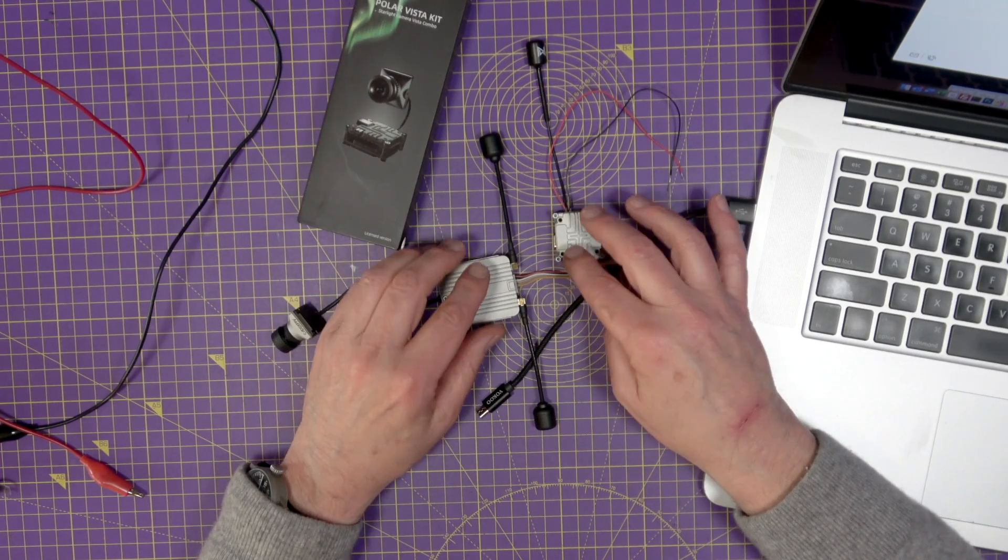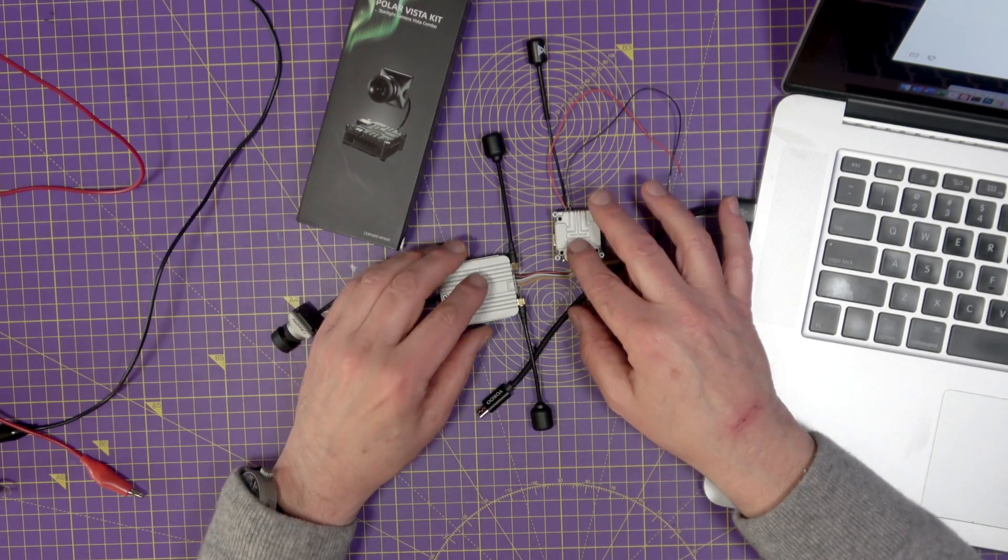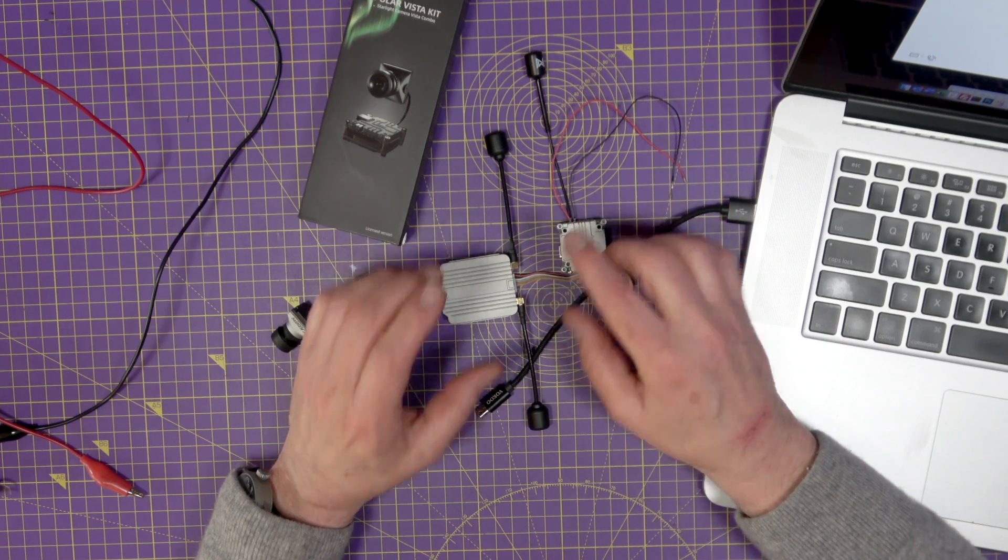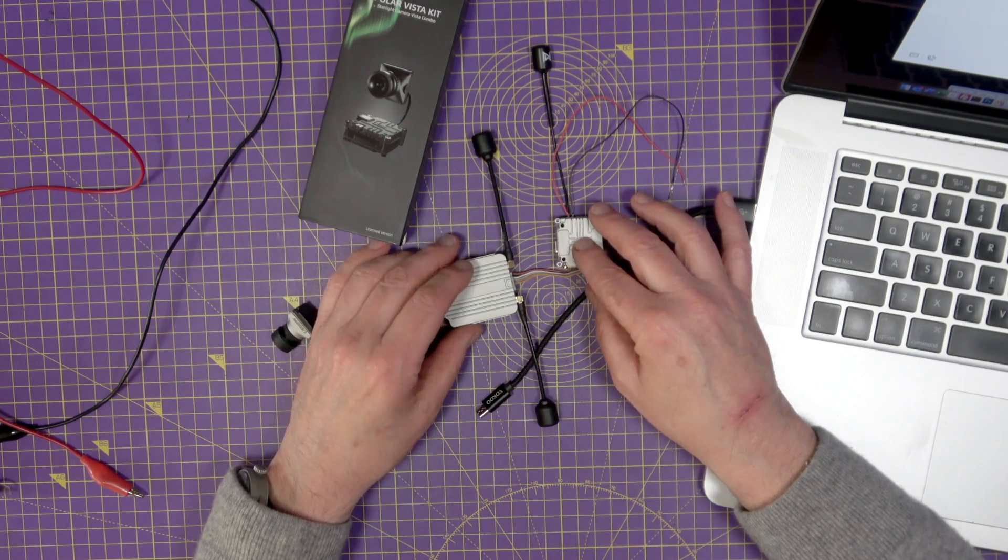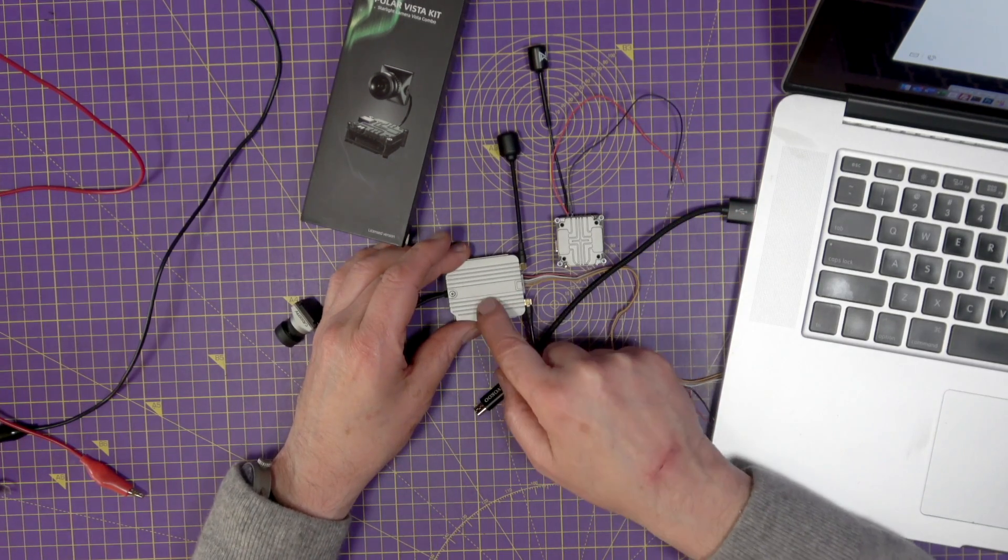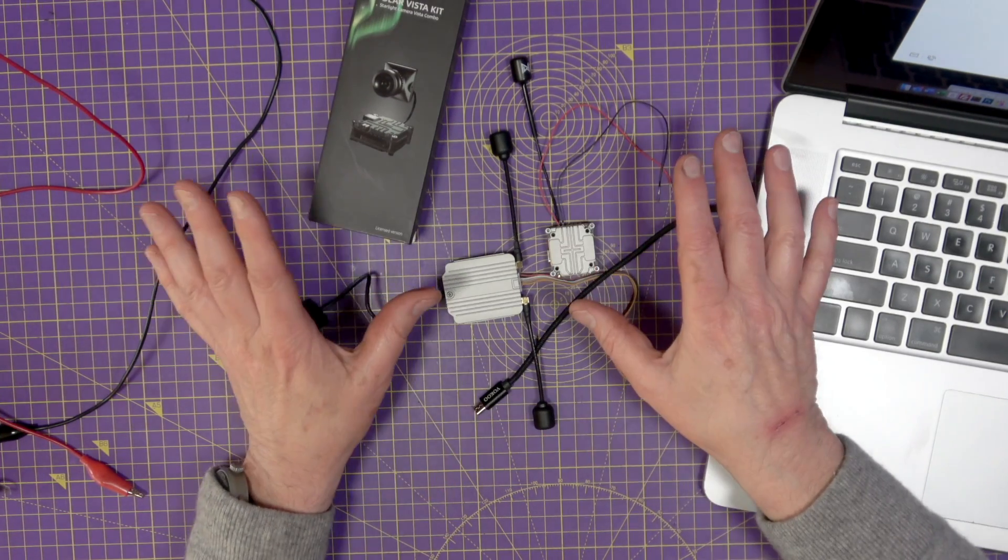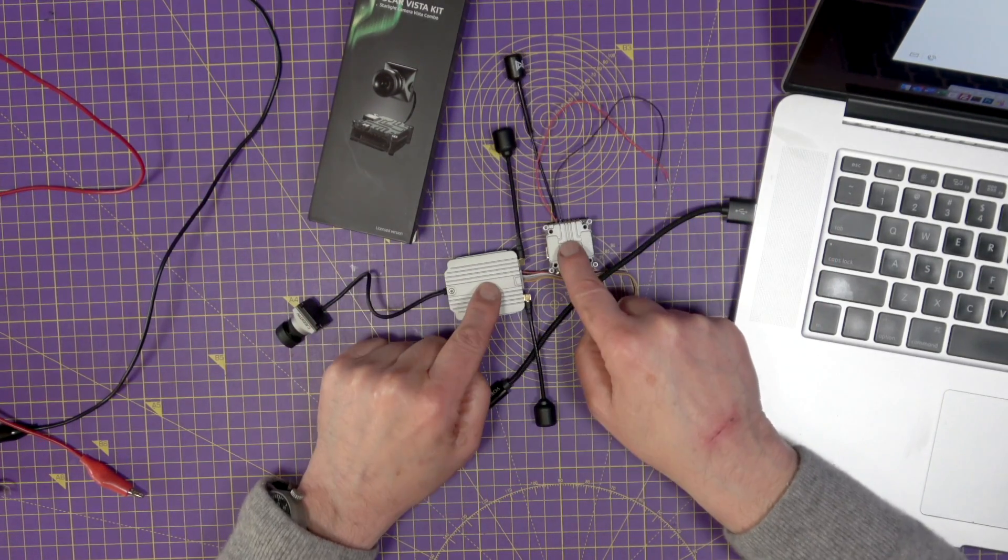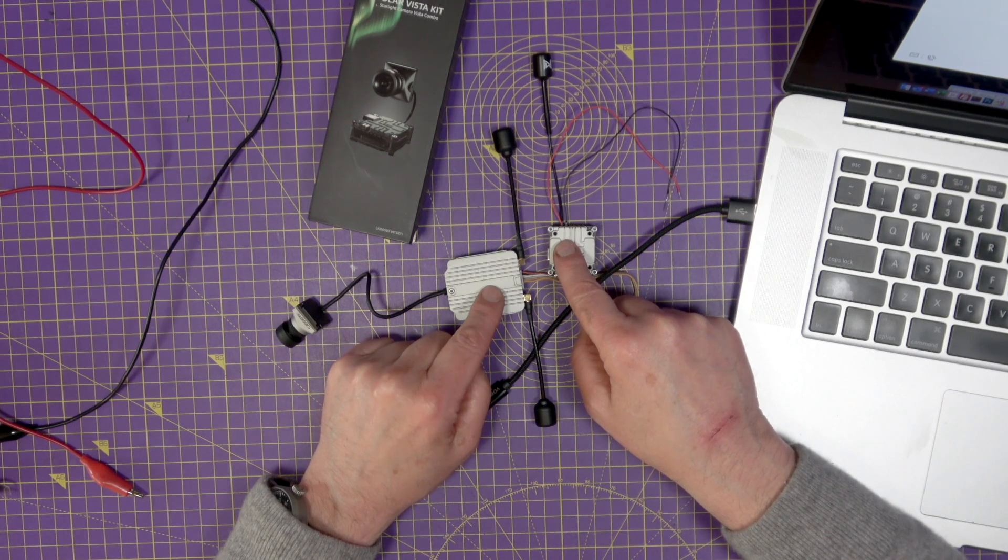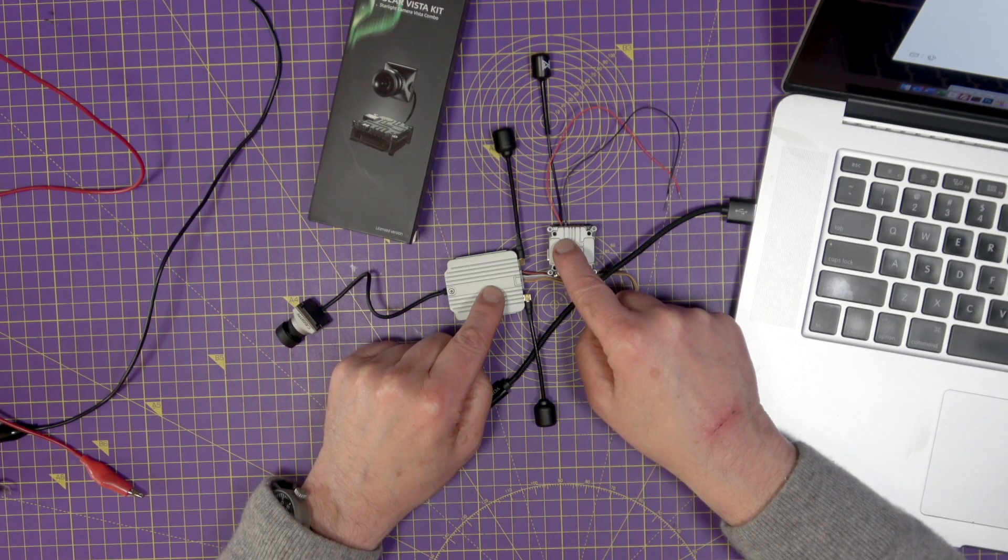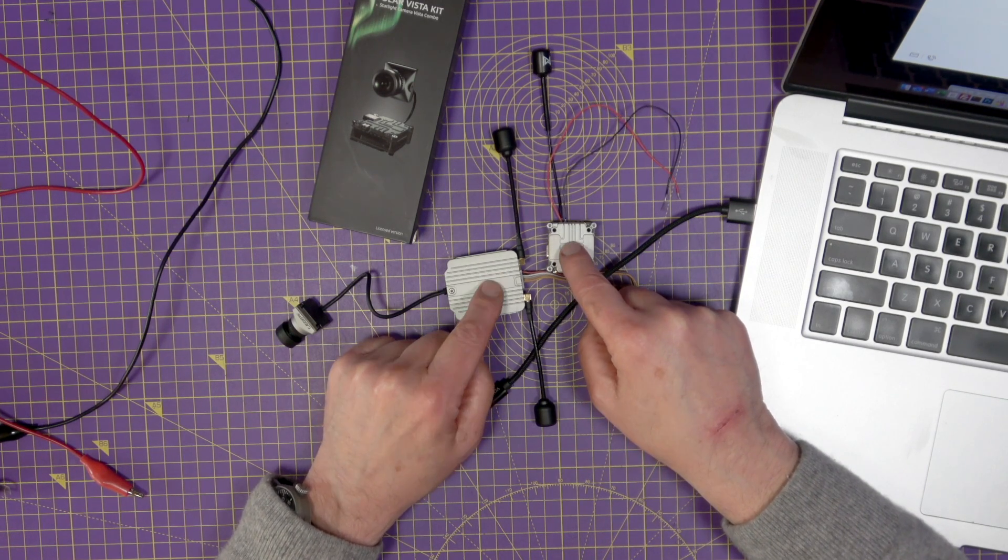My advice, along with a lot of other people, is that if you've got a version 1 air unit or a Caddx Vista sitting on the shelf, make sure that it's activated and that you've got version 1.00.0606 of the firmware, which is a known good version.